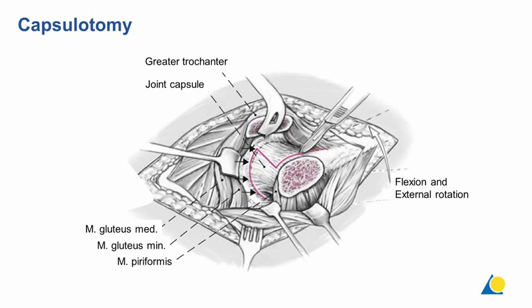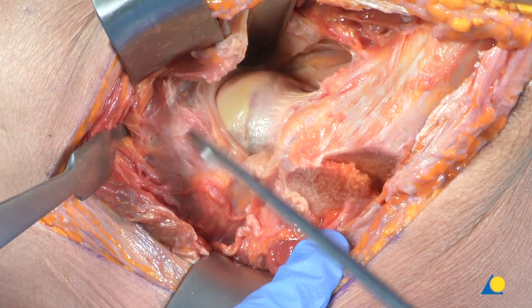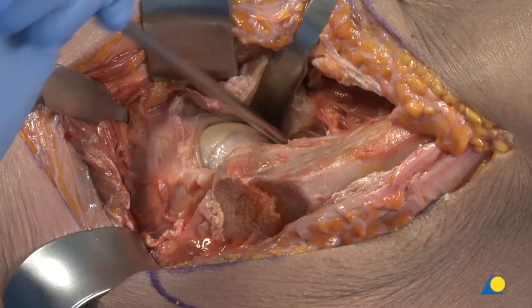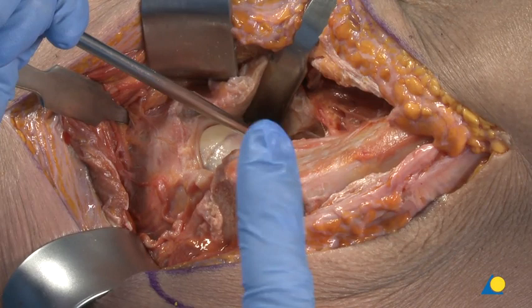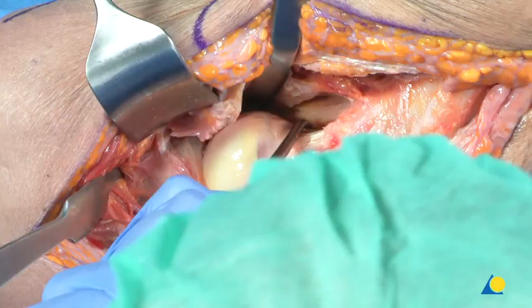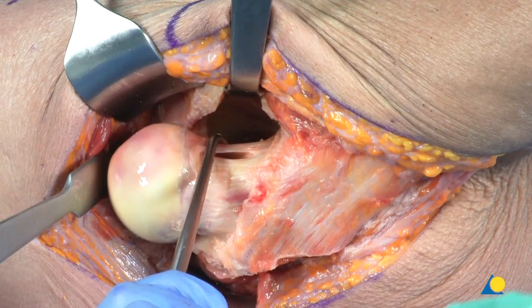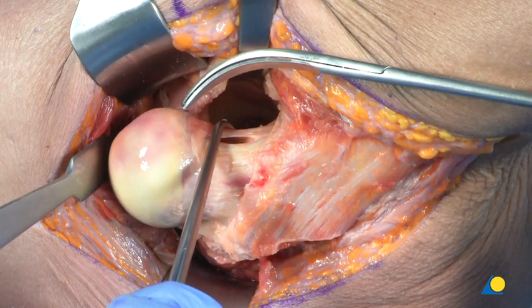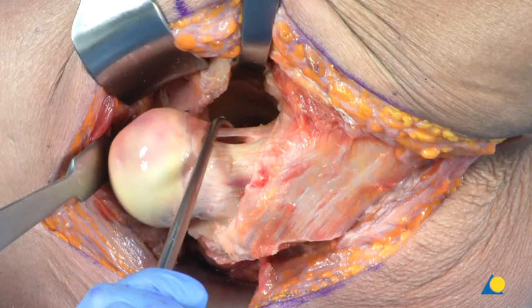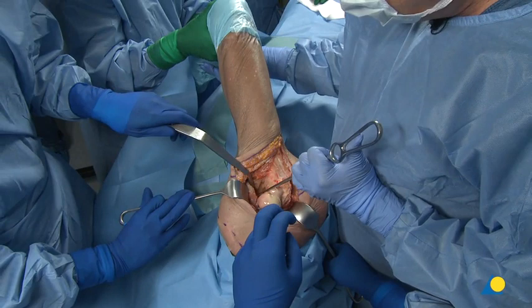For dislocation: no external rotators have been cut yet — only the gluteus minimus and vastus musculature have been mobilized. The leg is brought into extension and external rotation and the femoral head pops out easily. In older patients this is relatively easy. A curved gynecological scissor is used to go around the ligamentum teres and cut it; in older patients it may be quite weak or simply torn during dislocation. The leg is then brought into a sterile bag on the other side.